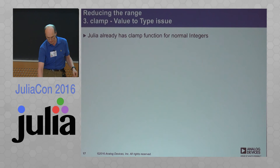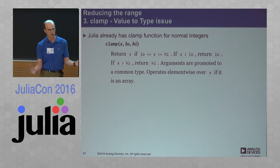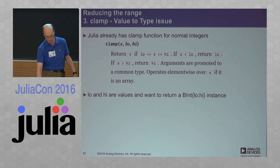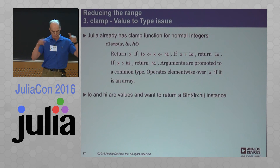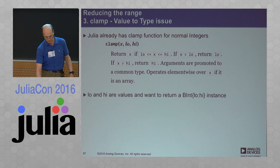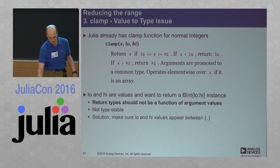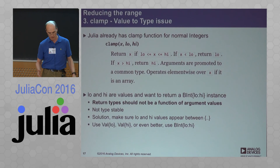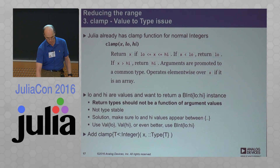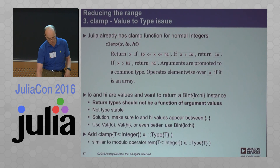The third way is to do a clamp. There's an interesting issue here: Julia already has a clamp function where you specify a low value and a high value and clamp between the two. Those are values, and I want to return those inside the type parameters — the curly brackets. But that's a bad thing to do, because the return type should not be a function of the value — that's not type stable. You really want those values to be inside curly brackets somewhere. The easiest way is to use the Val kind of thing, or just to use the type, which is what I've done. So I've added clamp to a type rather than clamp to a low-high pair, in the same way as the modulo operator.